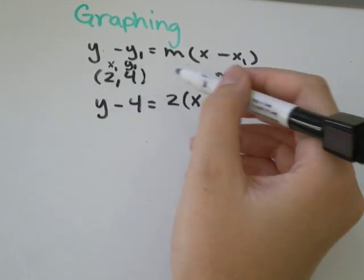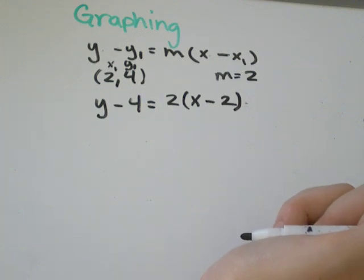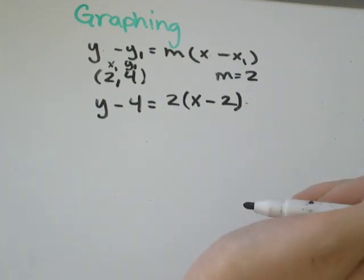So y minus y1 was 4 equals m is 2 times x minus x1 is 2. You could leave that there as the equation of the line. That would be the equation of the line in point-slope form.